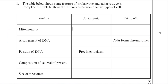The first feature is mitochondria. Prokaryotic cells don't contain any membrane-bound organelles. Mitochondria are membrane-bound, so they will be absent in prokaryotic cells but present in eukaryotic cells, because eukaryotic cells are the more complex cells containing many different membrane-bound organelles. So all you had to put was 'absent' for prokaryotic and 'present' for eukaryotic.